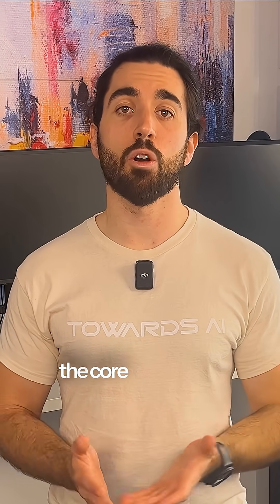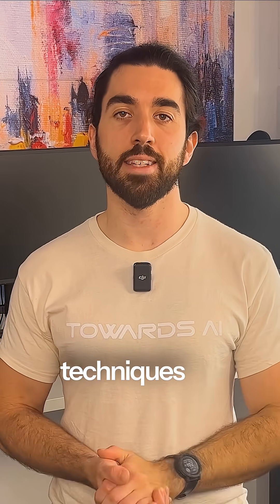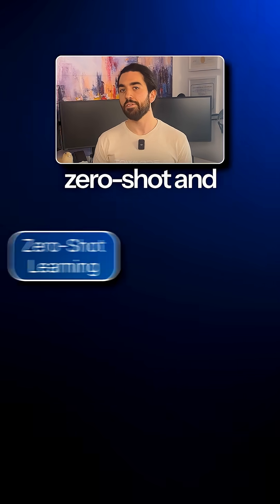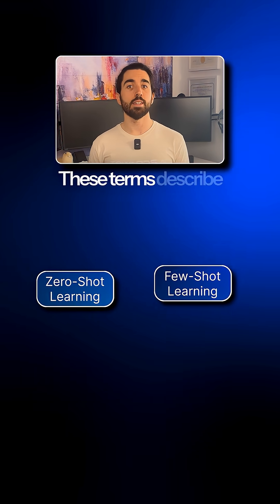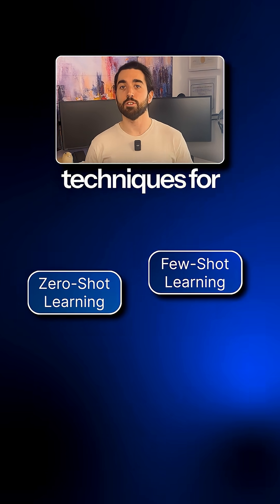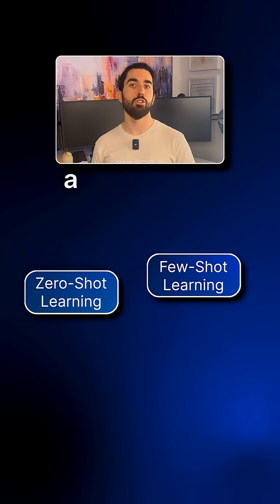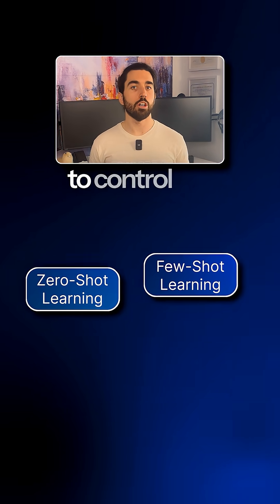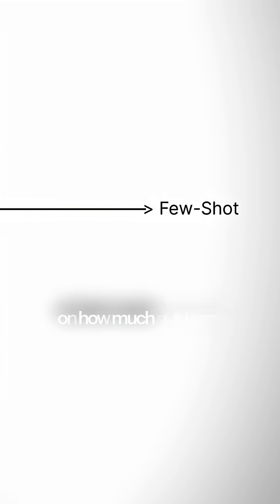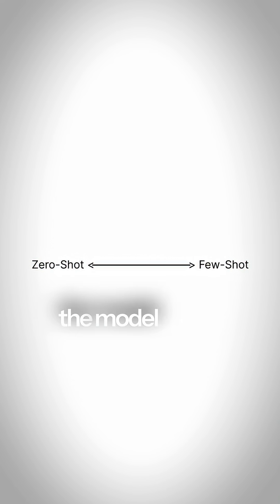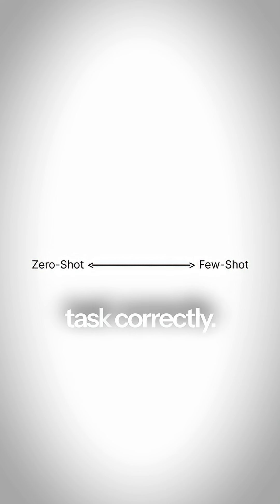Let's talk about the core prompting techniques we need to know: zero-shot and few-shot learning. These terms describe two fundamental techniques for structuring a user prompt to control the model's output. The choice between them depends on how much guidance the model needs to perform a specific task correctly.